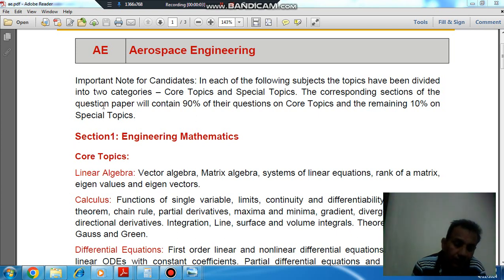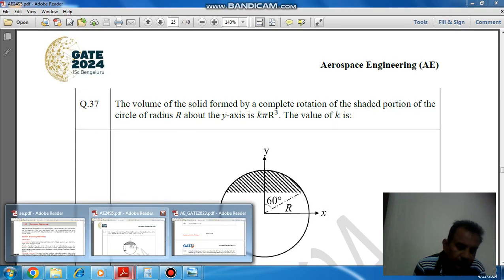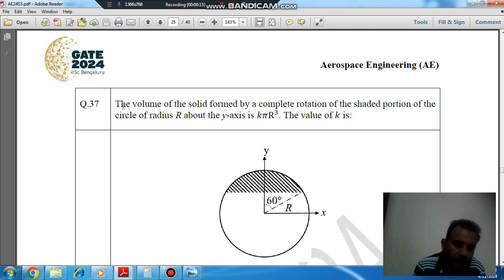Hello, welcome again. We are covering GATE Aerospace Engineering flavors, Section 1 in Engineering Mathematics, and the core topic is calculus. We have finished the theory part, now we are following previous questions. Question number 37 from GATE 2014: The volume of solids formed by a complete rotation of shaded portion of the circle of radius R about the y-axis is k*pi*r^3. The value of k is?